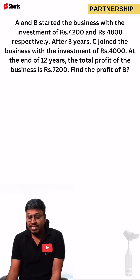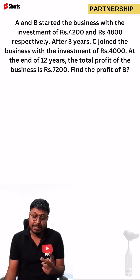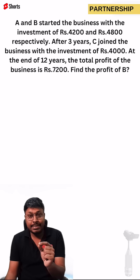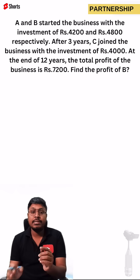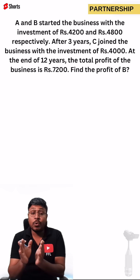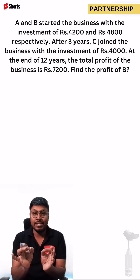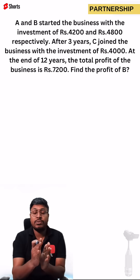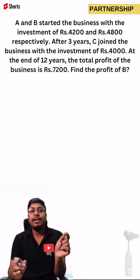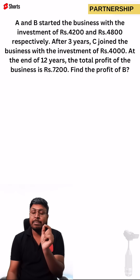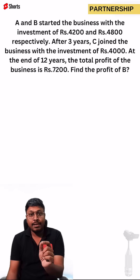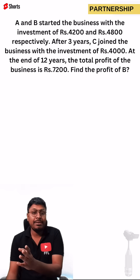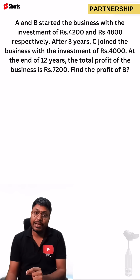Initially, two persons invested 4,200 and 4,800, and person C joined the business only after three years. The total business was run for 12 years. Out of 12 years, for the first three years, person C was not in the business. So 12 minus 3 equals 9 years — person C will be in the business only for nine years. A and B will be in the business for the complete 12 years.